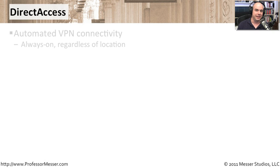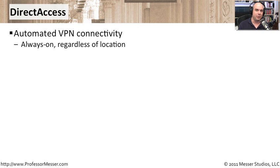Direct access is one of the new features that comes with Windows 7. It is very similar to VPN technology, except with traditional VPNs, you as an end user decide when you're going to bring up and use that encrypted tunnel. Direct access takes this to the next level — it is always on. If you're in your home office, it maintains an encrypted tunnel back to your corporate office. If you go to your corporate office and sit down inside the building, direct access automatically knows you're on the local network and doesn't set up a VPN connection.